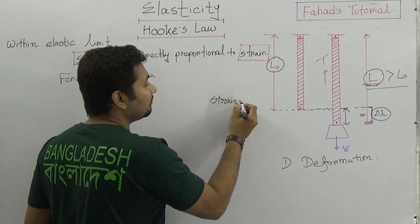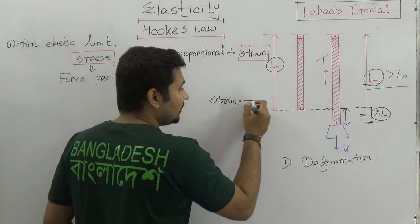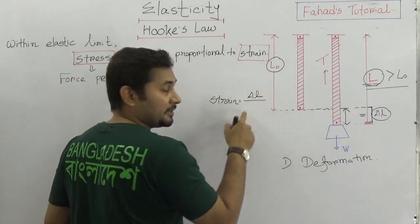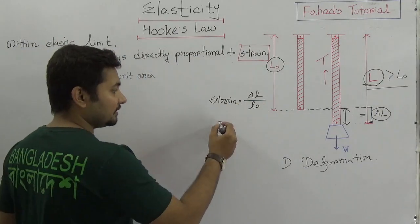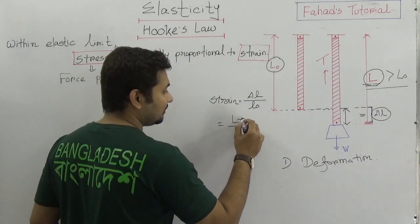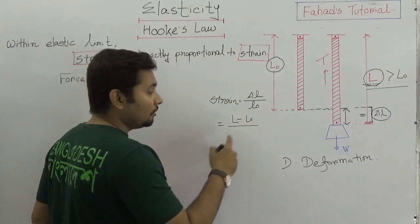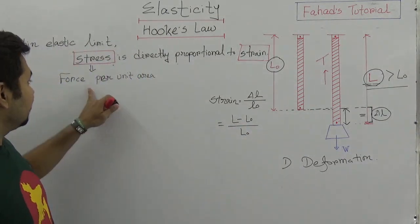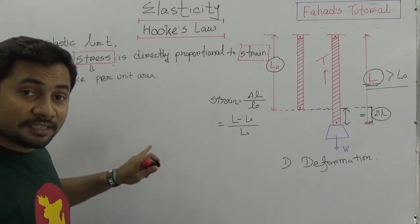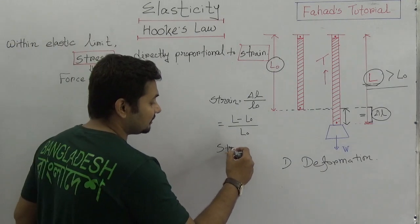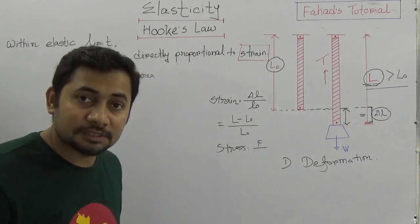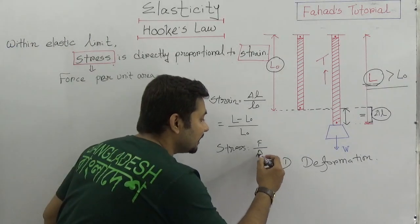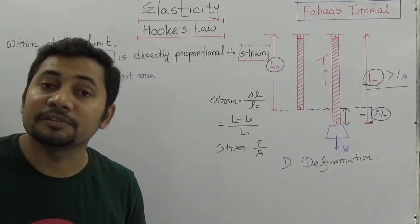So we got it as a strain. That strain means the changes happening on its previous length. So usually the strain is L minus L0 over L0.